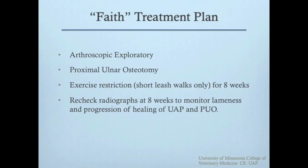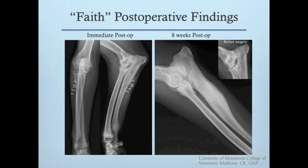Following surgery, eight weeks of exercise restriction and a recheck radiograph were recommended. Immediate postoperative radiographs confirmed the proximal ulnar osteotomy on both views. The lateral recheck at eight weeks demonstrated bony union of the osteotomy site and good progression of UAP healing. Physical exam at eight weeks was consistent with the owner's report that lameness and elbow pain had resolved. The owners were informed that Faith could develop elbow arthritis in the future due to this developmental abnormality.